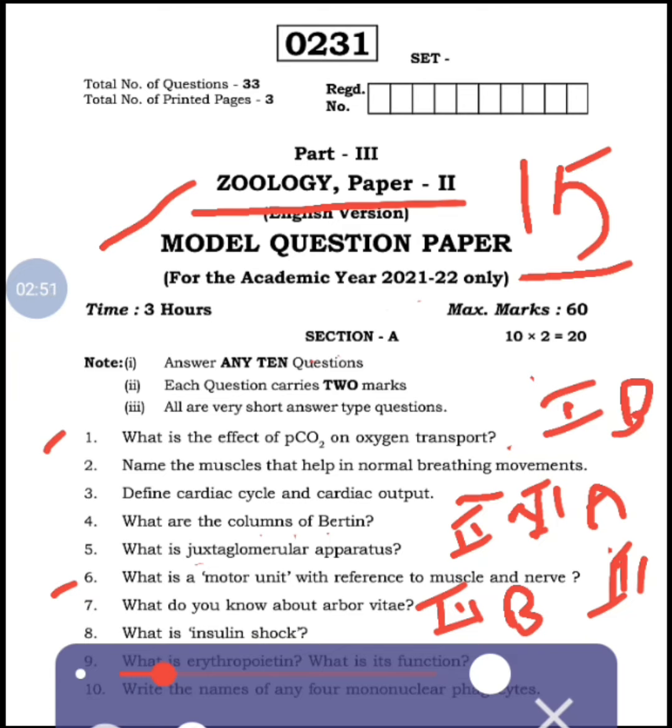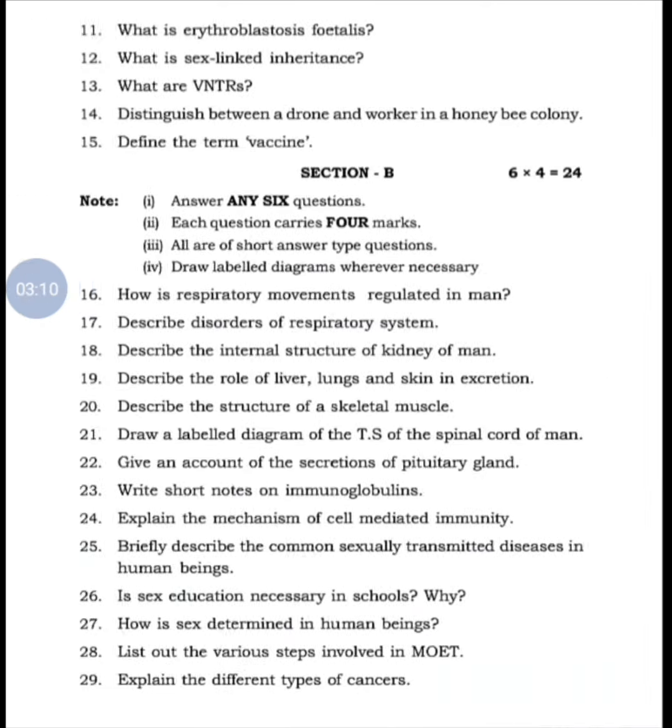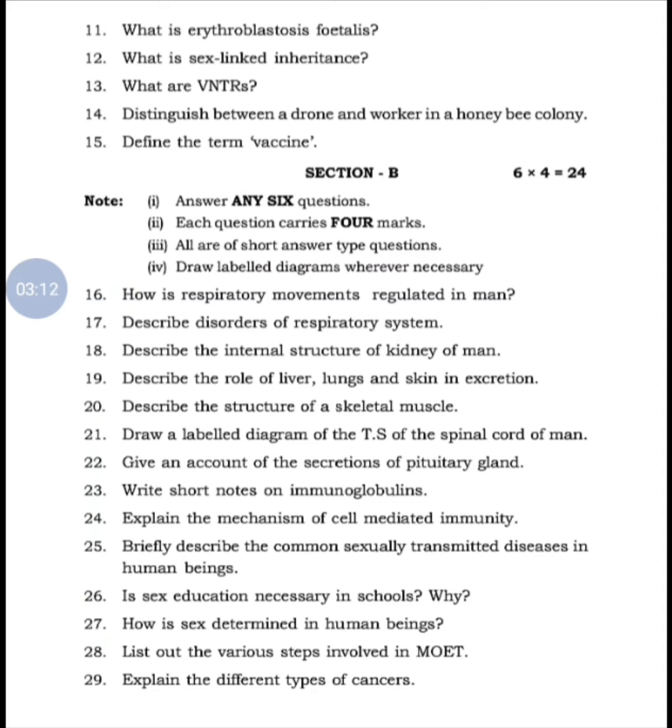Ninth question: What is erythropoietin? - also from endocrine system, so 2 questions from 4A. Tenth question: Write the names of any 4 mononuclear phagocytes - that is from immune system, 4B. This is a very informative video, watch till the end.